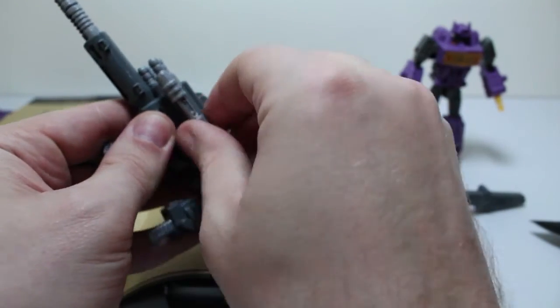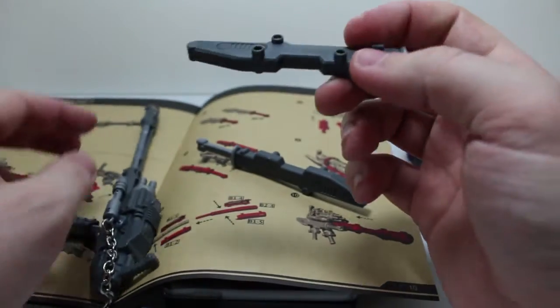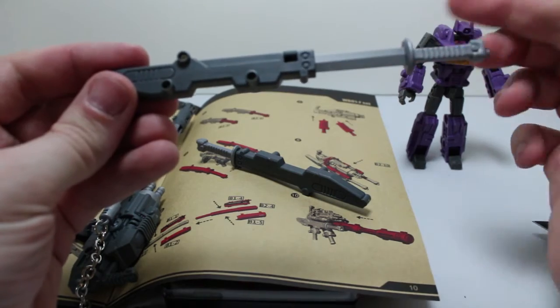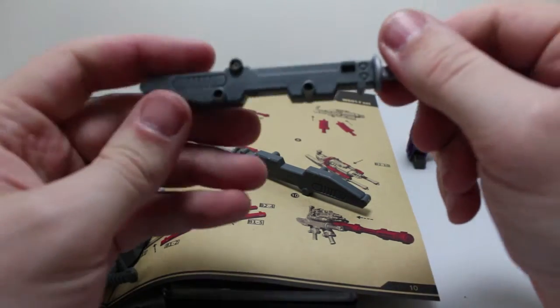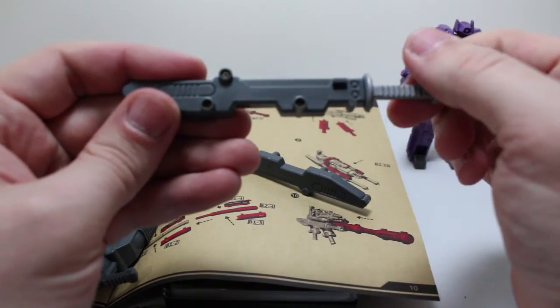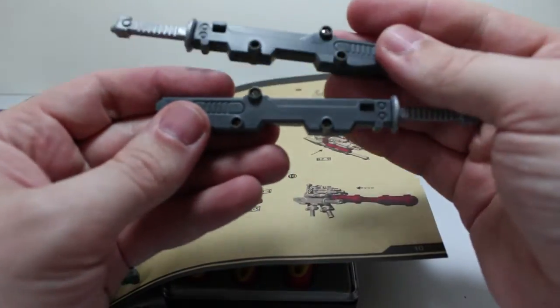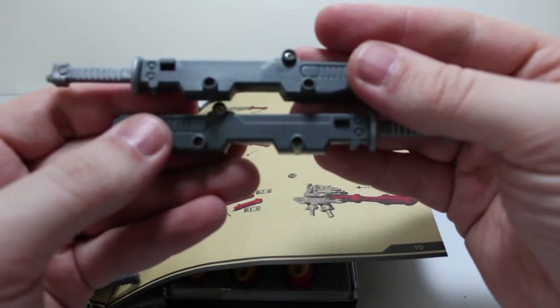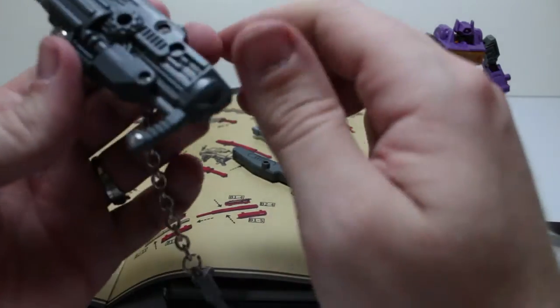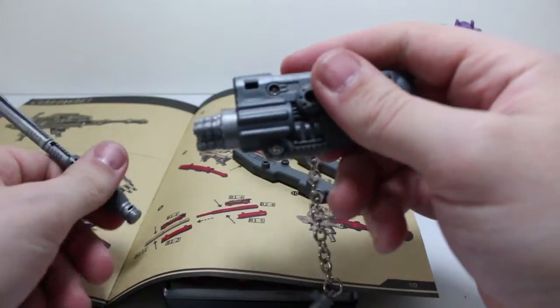The only other place to install screws are in these sheaths for the swords. These are the same screws, those long skinny screws that were used in the not-Shockwave, whatever you want to call him. So there's three in each of these.